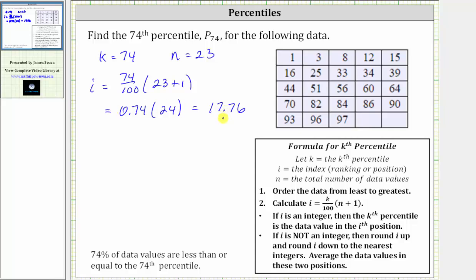So if we round i down to the nearest integer, which we will call i sub down, we have 17. If we round i up to the nearest integer, which we'll call i sub up, we would have 18.